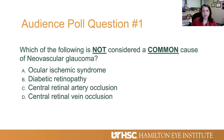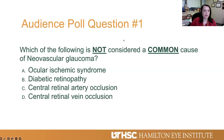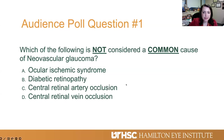I have three poll questions that we will review both at the beginning and at the end of the lecture. Our first question: which of the following is not considered a common cause of neovascular glaucoma? The options are ocular ischemic syndrome, diabetic retinopathy, central retinal artery occlusion, and central retinal vein occlusion. We will review these at the end of the lecture.